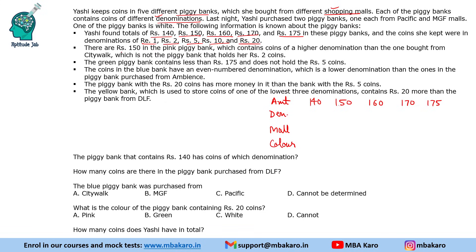It says there are 150 rupees in the pink piggy bank, and it contains coins of a higher denomination than the one brought from CityWalk, which is not the piggy bank that holds 2-rupee coins. The green piggy bank contains less than 175 and does not hold 5-rupee coins. The coins in the blue bank have an even denomination — that is 2, 10, or 20 — which is lower than the denomination in the piggy bank purchased from Ambience mall, so it cannot hold 20. It can have either 2 or 10. The piggy bank with 20-rupee coins has more money in it than the bank with 5-rupee coins.